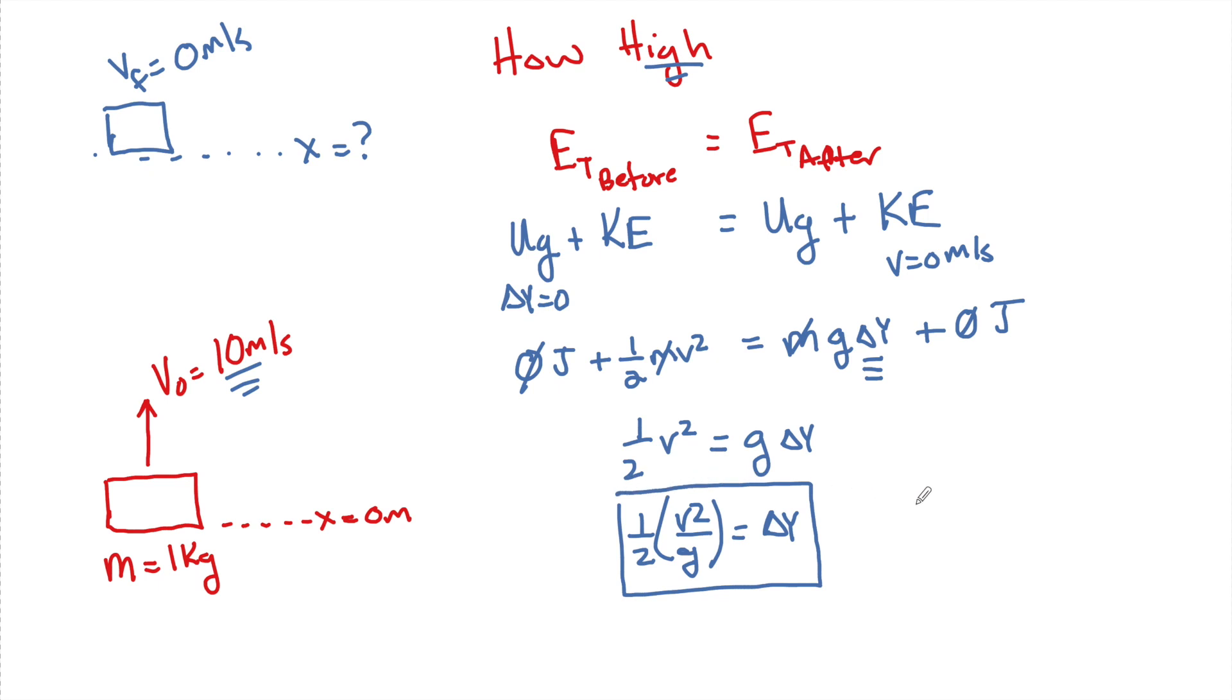And if you wanted to plug that in, you would just see 1 half equals 10 squared over 10 equals delta Y. 1 half, 100 divided by 10 equals delta Y. Delta Y equals 5 meters.